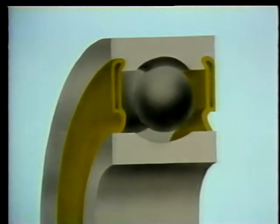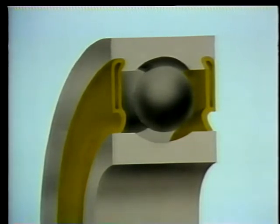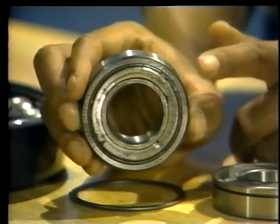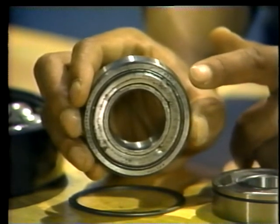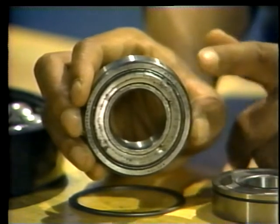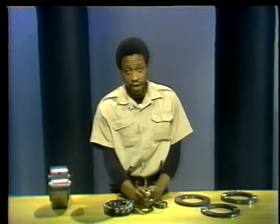Seals look very much like shields, except that they have a lip that rubs against the ring that rotates. Seals can also be used on one or both sides. When found on both sides, it's usually because the seal is holding in lubricant put into the bearing by the manufacturer. Seals keep lubricant in and virtually everything else out. This type of bearing is called a permanently lubricated bearing because the lubricant is expected to last for the life of the bearing.